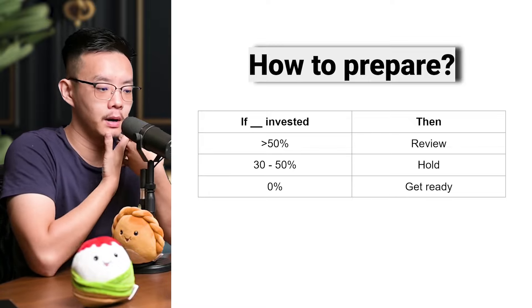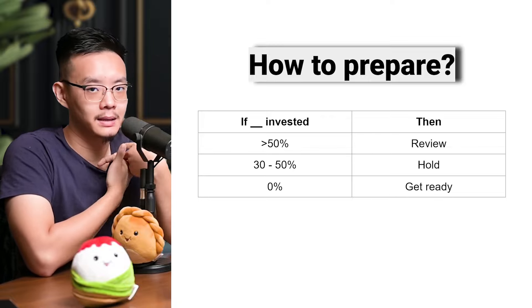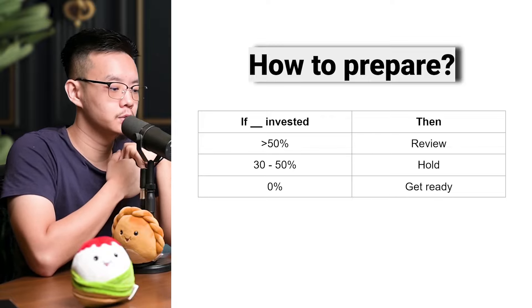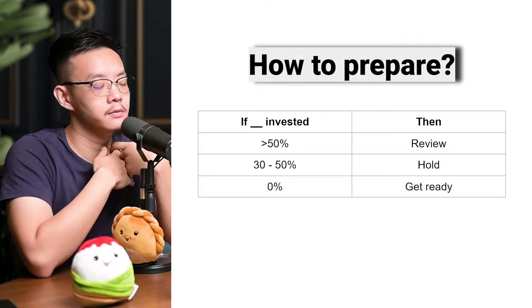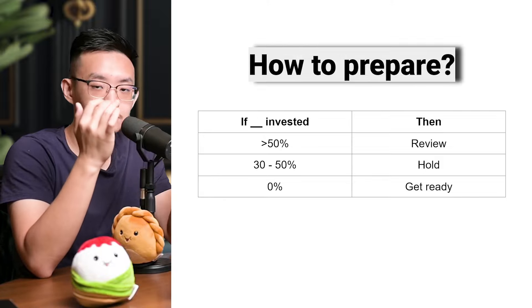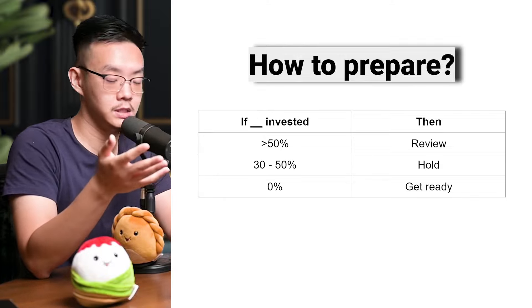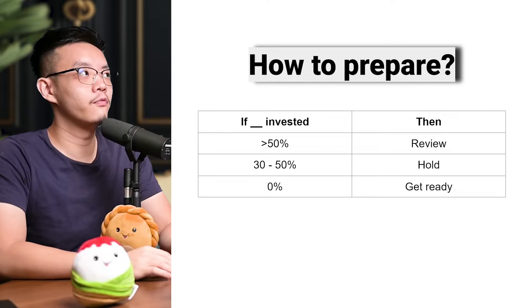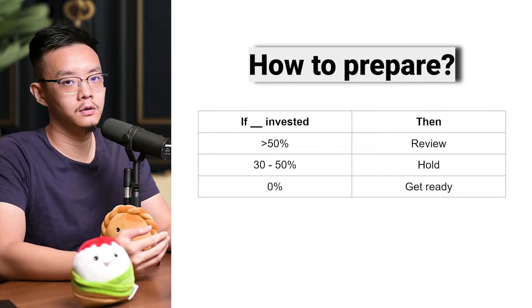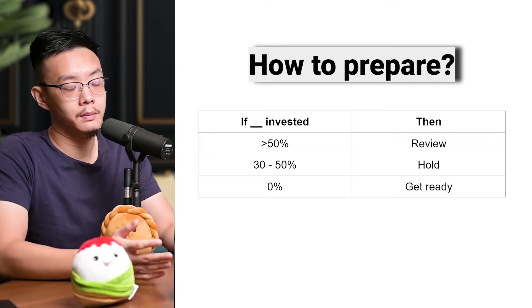Whether you use a mathematical approach or a market cycle approach, the way I usually do it — a simple, easy-to-understand approach — is that your portfolio should always reflect your psychology. What I mean is: once you've assessed the market and decided the likelihood of a recession, combine that with how comfortable you are seeing your portfolio drop by a certain amount. That determines your cash amount.